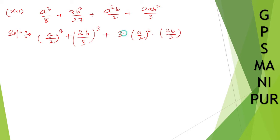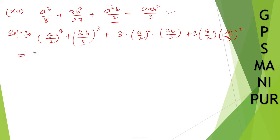The 3s will cancel, and the 2s will also cancel, giving us the required term. Plus thrice ab square: (2b/3) whole square — one 3 will cancel, another 3 will be left, and the 2s cancel as well. So I can write this down as (a + b) whole cube.